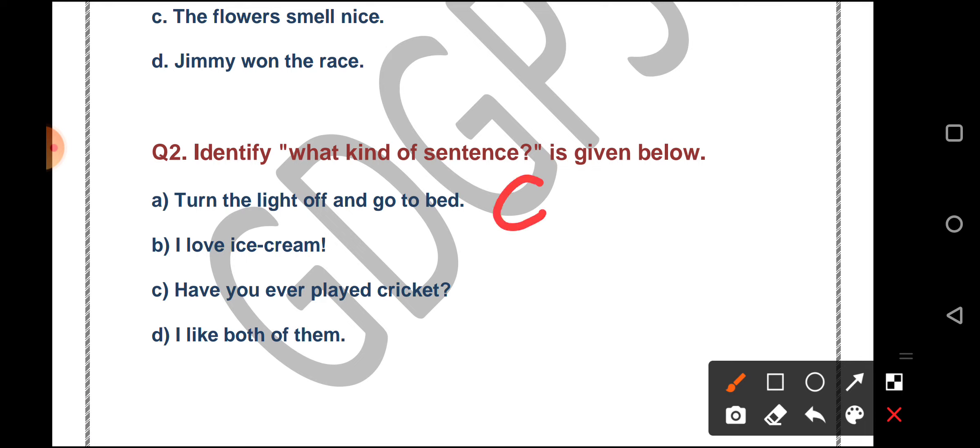I love ice cream. What will this be? This will be exclamation, because you are showing extra emotion here that you love ice cream. Have you ever played cricket? What are you doing here? You are asking for information. You are asking something about someone. So this will be a question sentence.